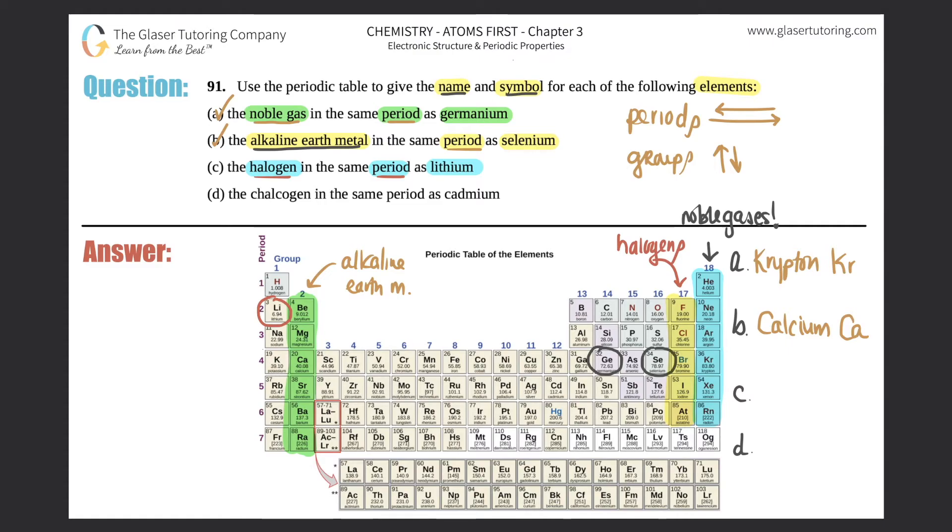So I'm going to put over here these are your halogens. And it's got to be in the same period as lithium. So if I scan, it would be fluorine. Name and symbol: F-L-U-O-R-I-N-E, that's fluorine, and fluorine is F, capital F.